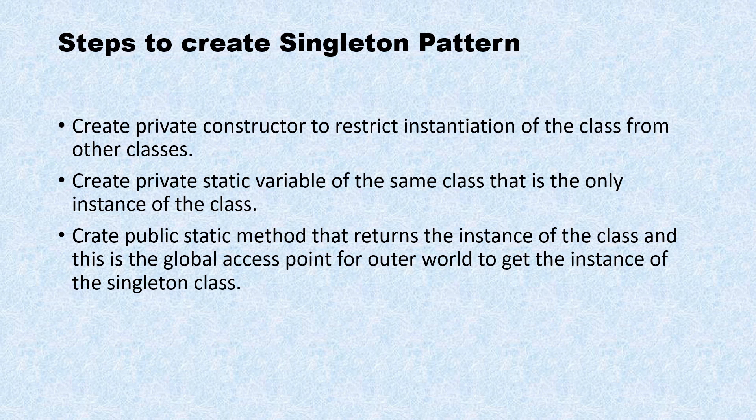The second step is to create a private static variable of the same class type — that is, only one instance of the class. In most approaches you are declaring a private static variable for the same class. The third step is to create a public static utility method that returns the instance of the class — this is the global access point for the outside world.